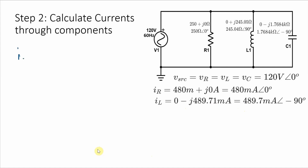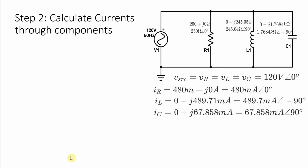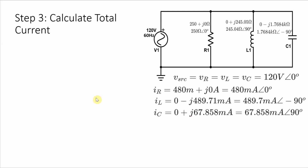The last individual current to calculate is that through the capacitor. When I convert that into rectangular coordinates, I get zero plus j·67.858 milliamps, or 67.858 milliamps with a phase angle of 90 degrees. To calculate the total current from the source, I can use Kirchhoff's current law — the source current gets split through the resistor, the inductor, and the capacitor. So the total current equals the current through the resistor plus the current through the inductor plus the current through the capacitor.